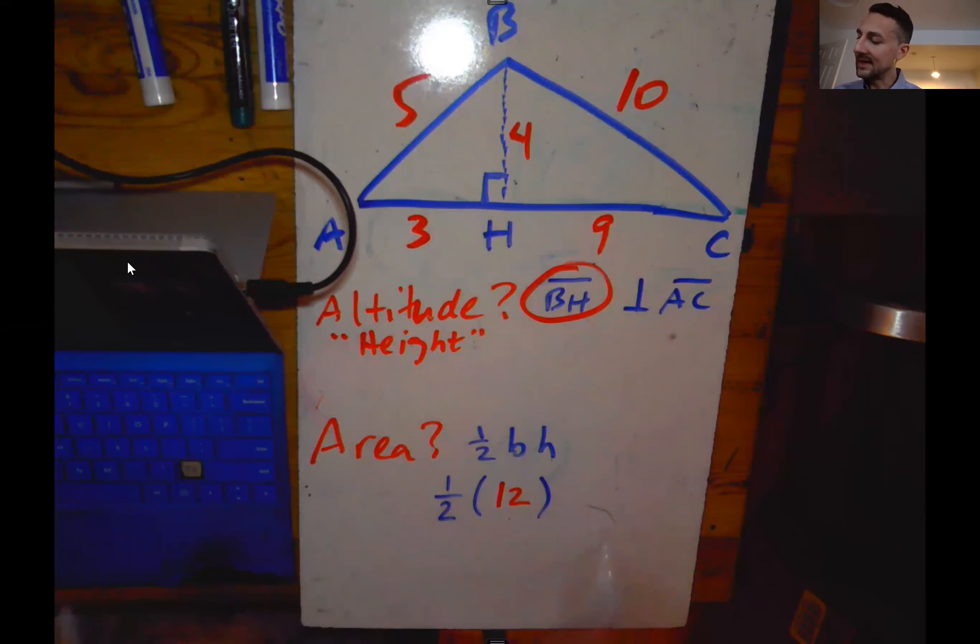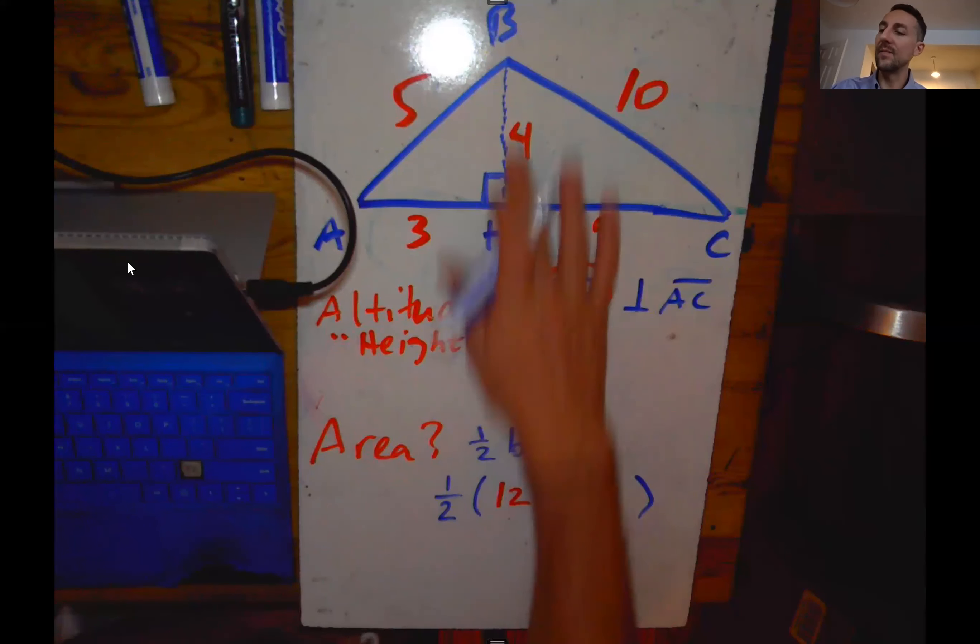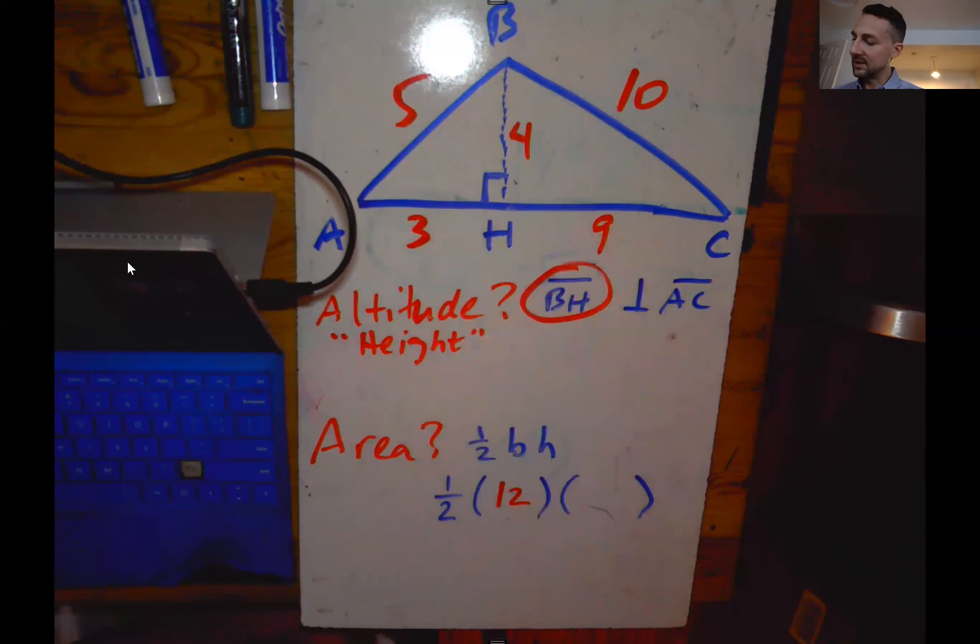And then our height, our altitude, is the perpendicular line from the base up to the vertex. So that here is 4.